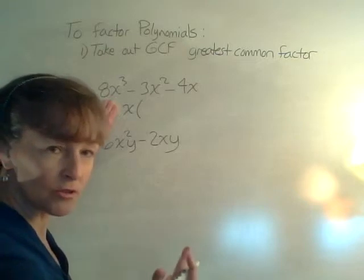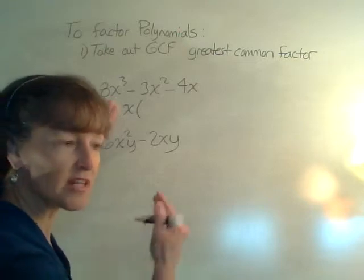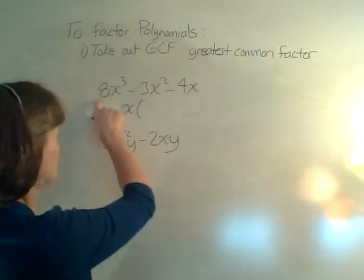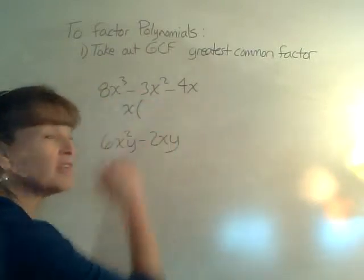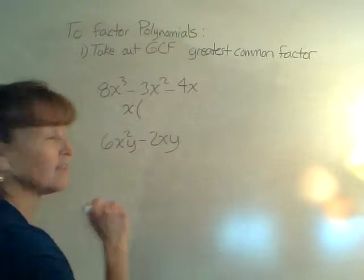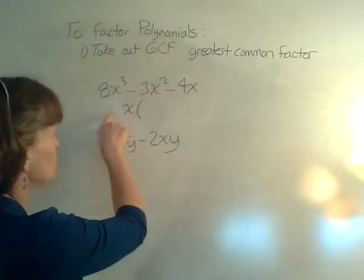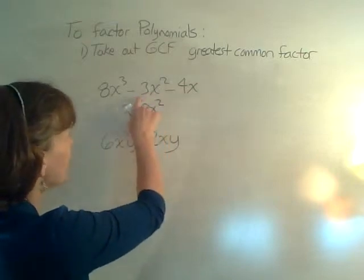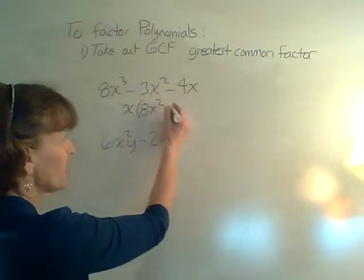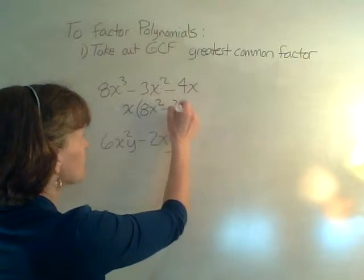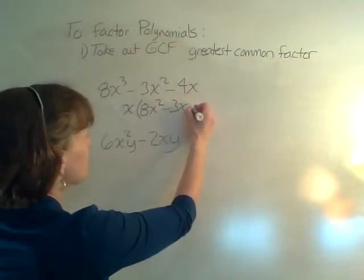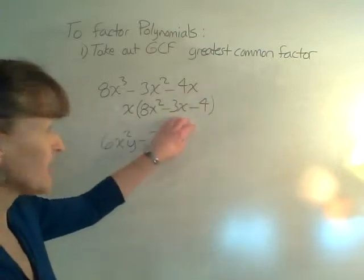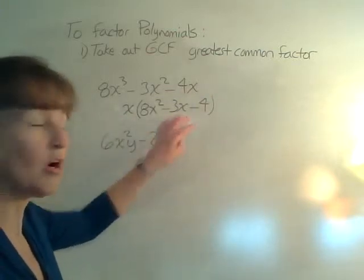This is using the distributive property backwards. Instead of multiplying, we are dividing out what's in common. I divide each term by x. If I divide 8x³ by x, I get 8x². Negative 3x² divided by x is -3x, and -4x divided by x is -4. That is factoring that polynomial.